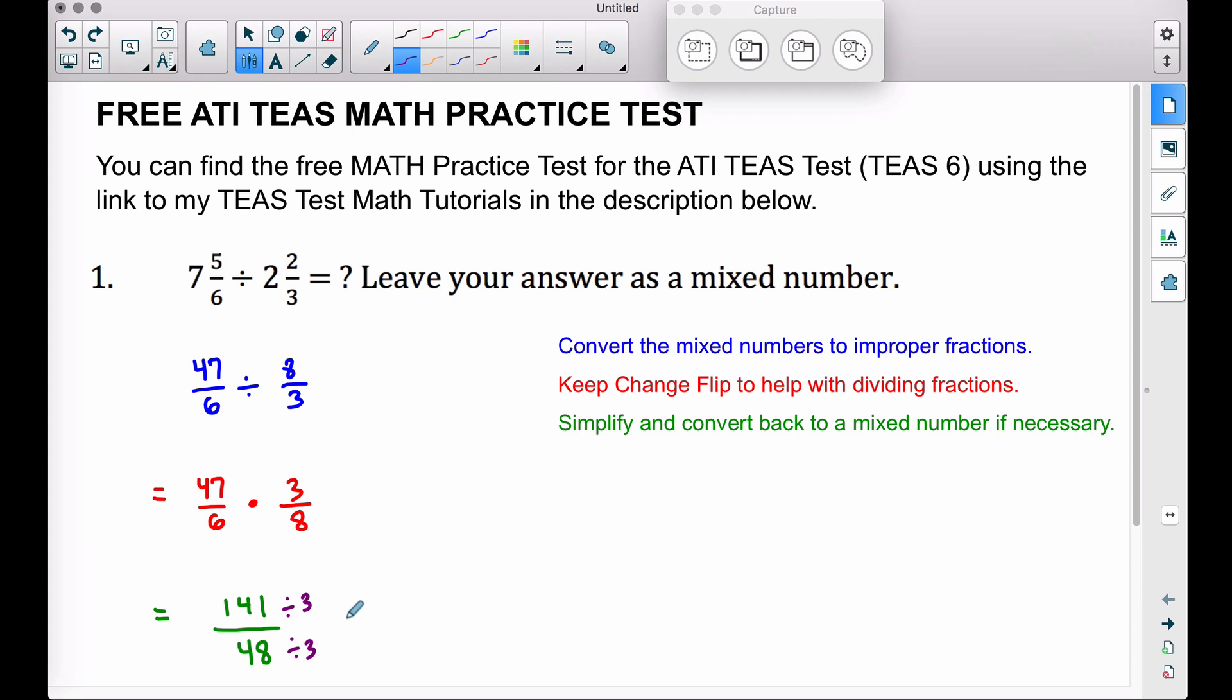So now therefore we have 47/16. This is our improper fraction. We want to convert back to a mixed number if necessary, and we do need to do that here. A quick way to convert an improper fraction back to a mixed number is to do a little bit of long division. 47/16 is the same thing as 47 divided by 16. Now recall 48 divided by 3 was 16.